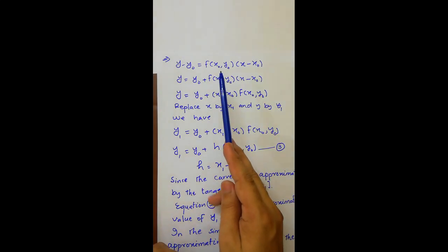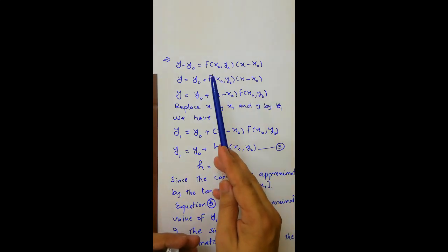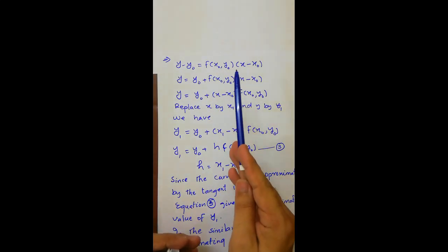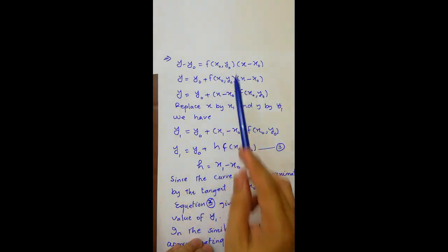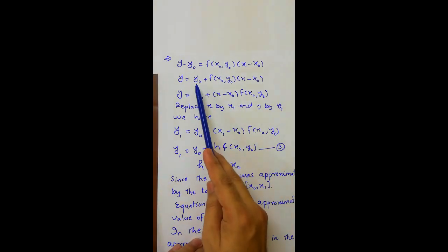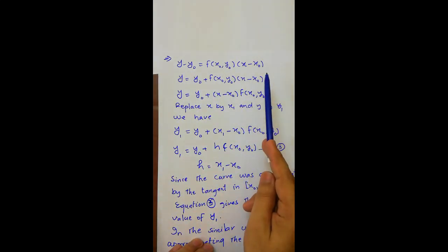As we considered in the start that dy by dx equals f of x, y, so dy by dx at x0, y0 will be equals to f of x0, y0.